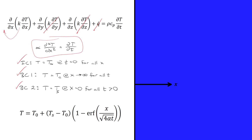The solution to this partial differential equation, subject to the initial condition and these two boundary conditions, gives us temperature as a function of both time and position. However, there are a number of different boundary conditions we can apply to model different forms of heat transfer in semi-infinite solids.